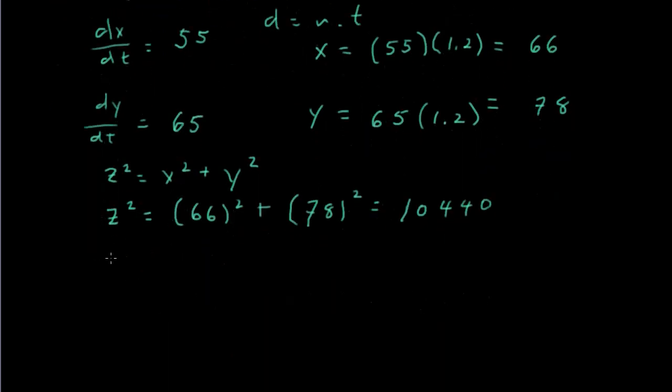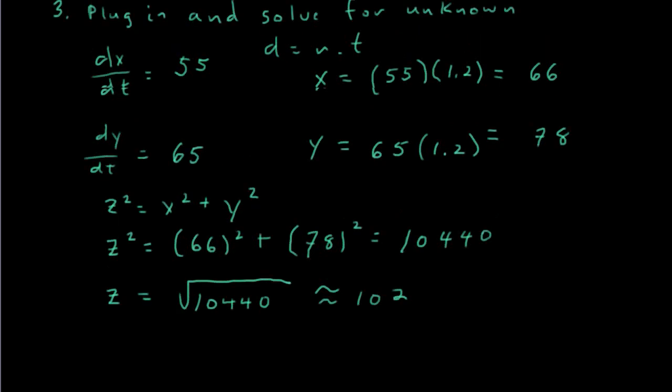this question would be in the part of the AP exam where you're allowed to use calculators. And so we'll find out that z squared is equal to 10,440. And then if we take the square root, once again using our calculator, we come up with z as being approximately equal to 102. So after 1.2 hours, the cars are 102 miles apart.